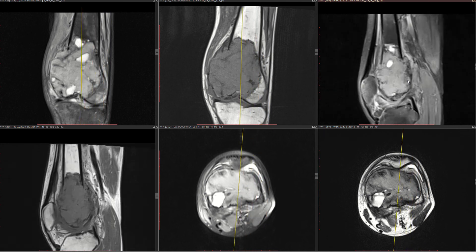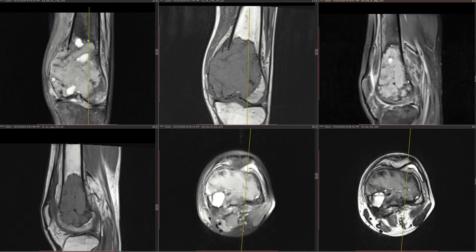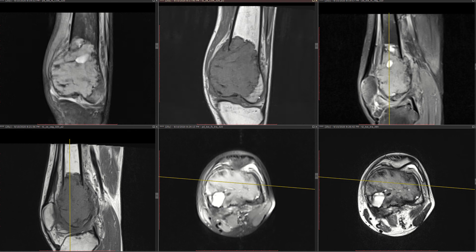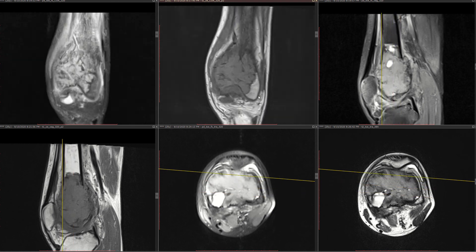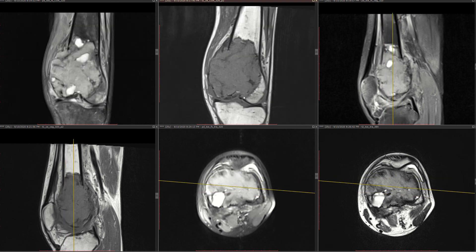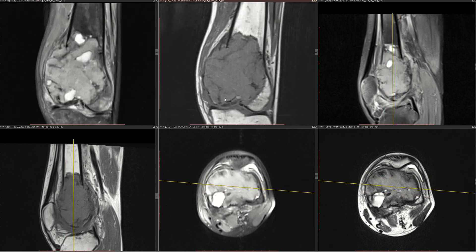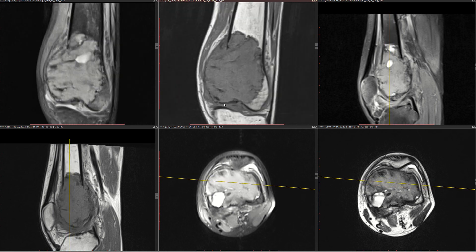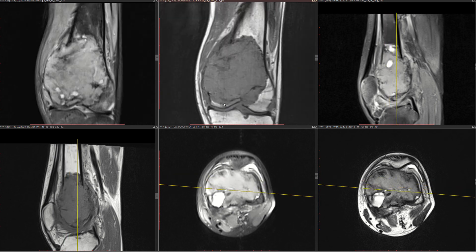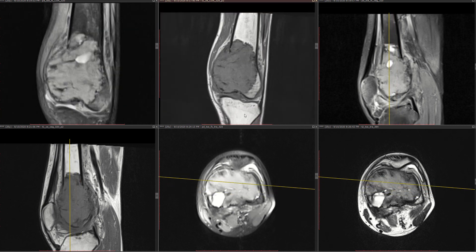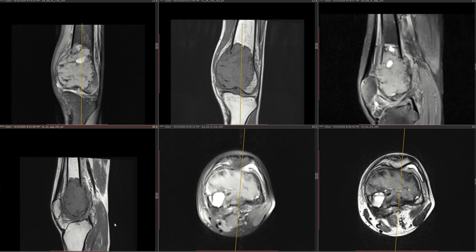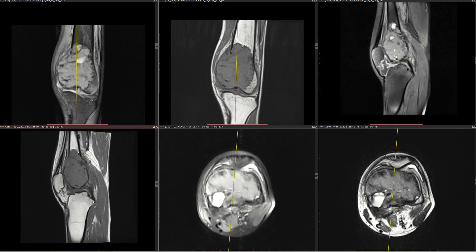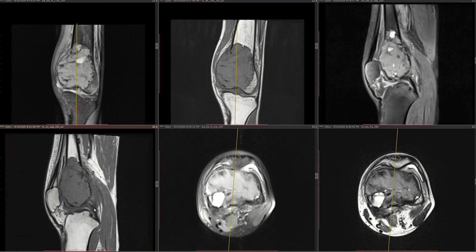Whether the joint is involved or not becomes important, as it determines what type of resection they will perform. Unfortunately, I feel the joint is involved here, because if you look closely, the distal part of the cortex is gone. So unfortunately the joint is involved, and I'm not sure exactly what kind of resection they'll do, but that's the situation.